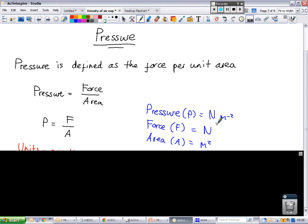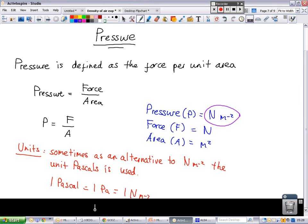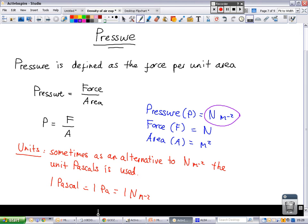Most commonly the standard units for pressure are going to be newtons per metre squared. But occasionally you might run into the Pascals. One Pascal, one Pa, is equal to one newton per metre squared.